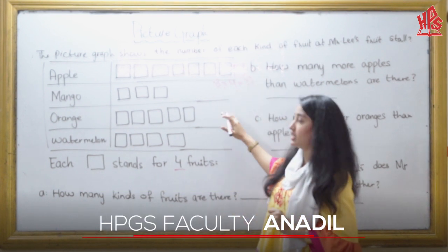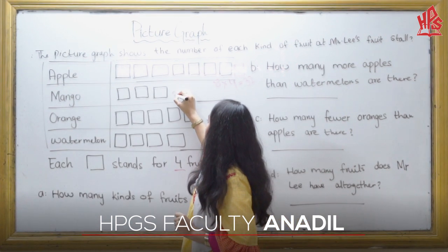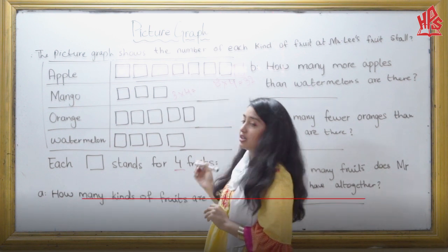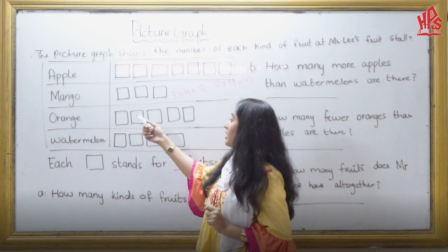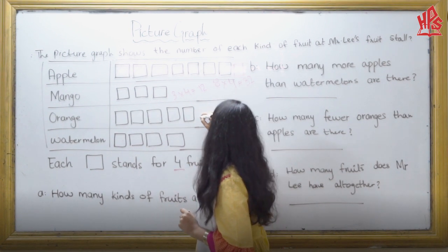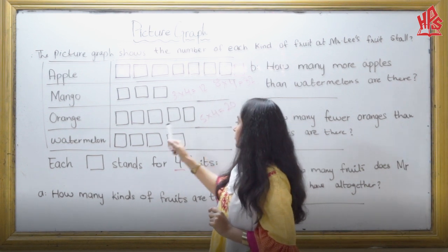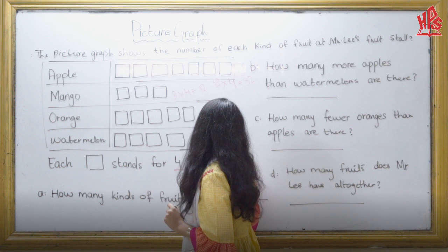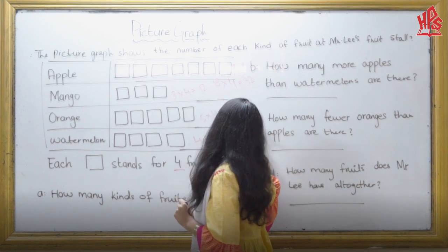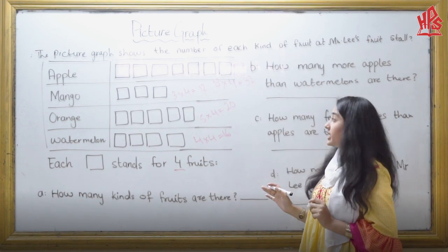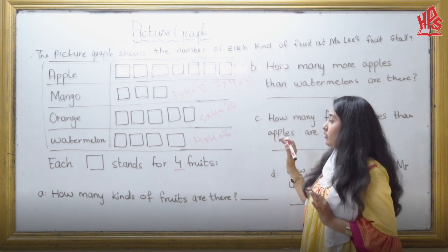Now we will do the same thing with the other 3 fruits. We have 3 boxes for mango, so we do 3 × 4, which is 12. Then for orange we have 5 boxes, so 5 × 4 is 20. So we have done the multiplication and now we know how many apples, mangoes, oranges, and watermelons there are.